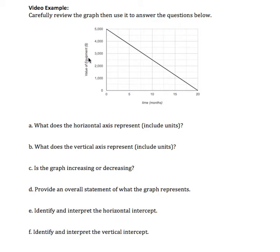The vertical axis represents the value of equipment and is given to us in dollars, starts at zero dollars and goes up to $5,000.